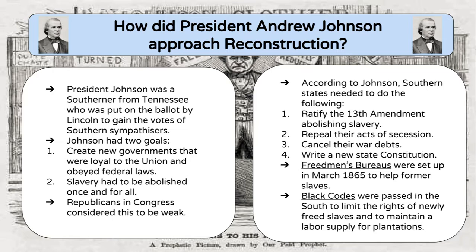Congress took things into their own hands. Our next left side question is: how did Congress approach Reconstruction? The Republicans in Congress believed that President Johnson's plan was far too lenient. Two-thirds is an important threshold — that's how much it takes to pass a constitutional amendment and also to override a president's veto. Both became incredibly important after the 1866 election.